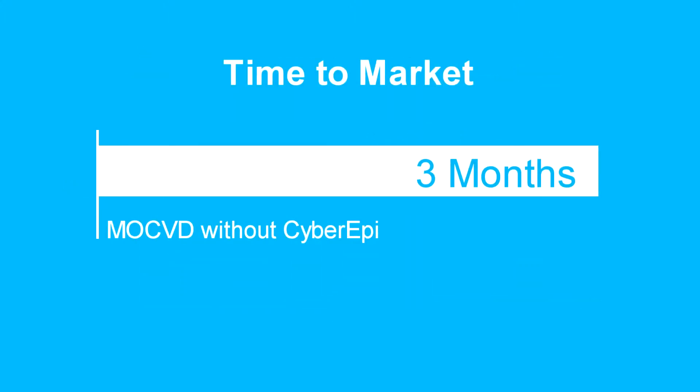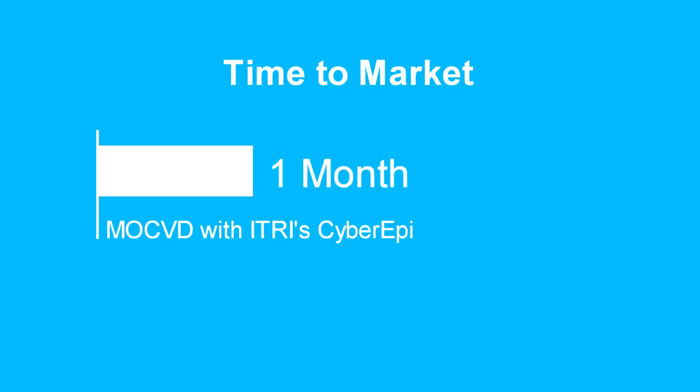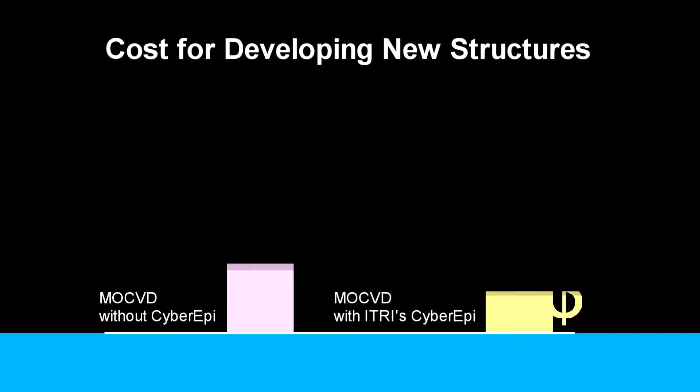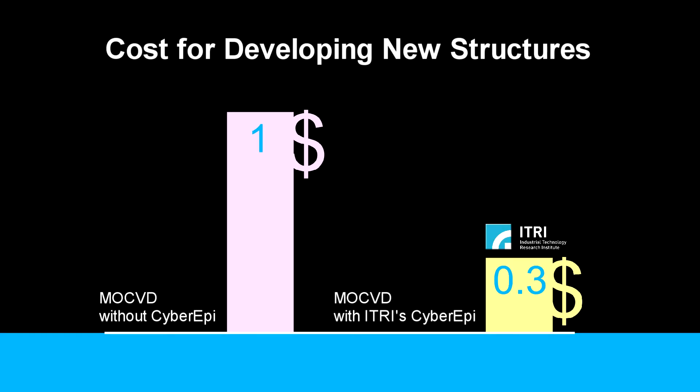CyberEpi can slash time to market for new products from three months to one month, cut manufacturing costs by up to 70% and double productivity.